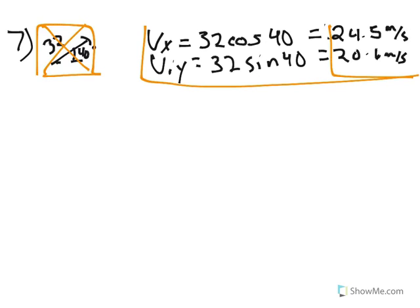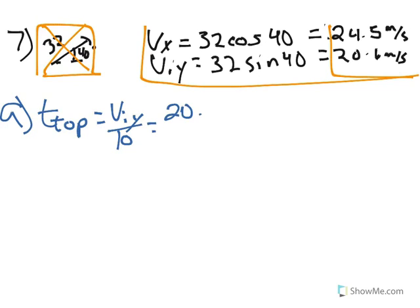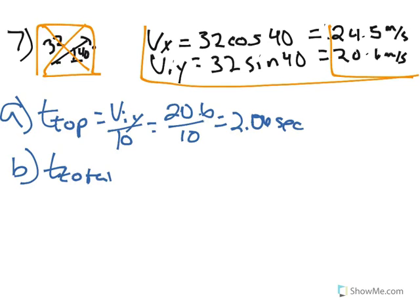For question A, find the time to the maximum height. Time to the top equals the initial velocity in the y divided by 10, which means 20.6 divided by 10, or 2.06 seconds. For B, the time back to the ground is the total time in the air — that is double the time to the top, which gives us 4.12 seconds.